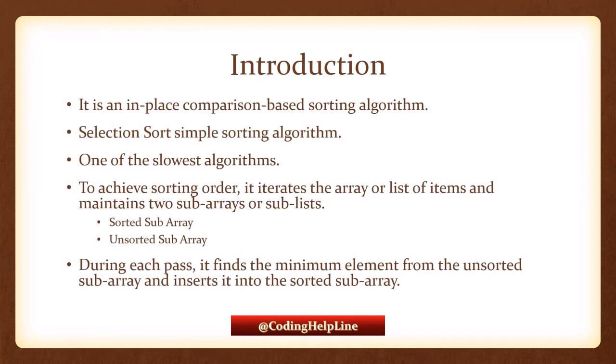Introduction. Selection sort is an in-place comparison-based sorting algorithm. It is a simple sorting algorithm, one of the slowest algorithms, and it is only good for smaller lists or arrays. For bigger arrays, it becomes very slow. To achieve sorting order, it iterates the array or list of items and maintains two sub-arrays: one sorted and the other unsorted. In each pass, it finds the minimum element from the unsorted sub-array and inserts it into the sorted sub-array via a swap.